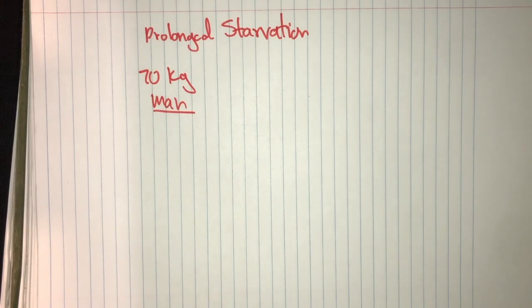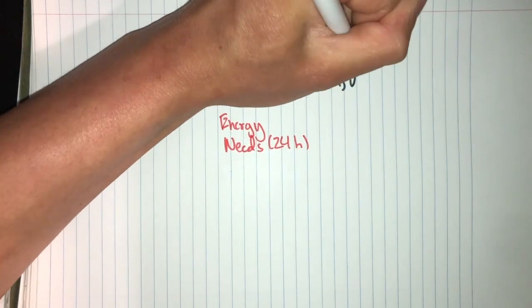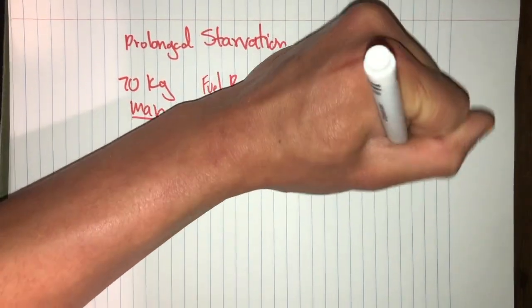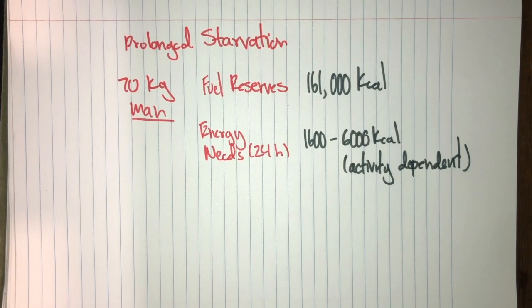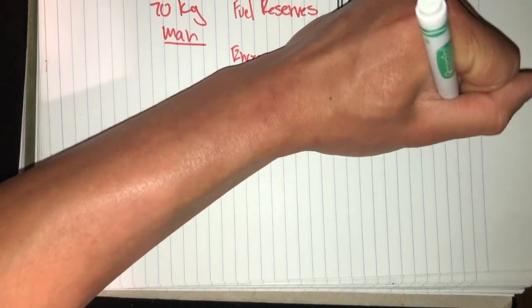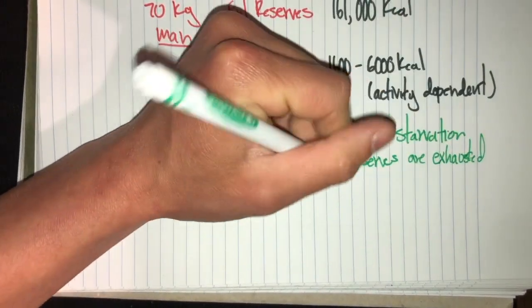All right, so now let's talk about metabolic adaptation due to prolonged starvation and how we minimize protein degradation. Let's take a 70-kilogram man who's about two-thirds of what Jason Momoa is. In an average day, he has about 161,000 kilocalories of storage. And in about a 24-hour period, his energy needs meet 1,600 to 6,000 kilocalories. This is activity dependent. This means the stored fuels will last anywhere from one to three months of starvation, but carbohydrate reserves, of course, would be exhausted in days' time.